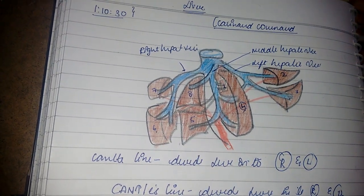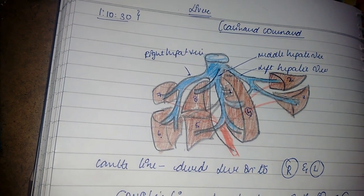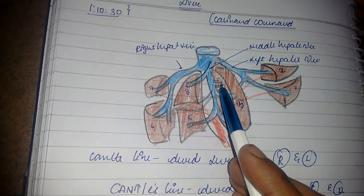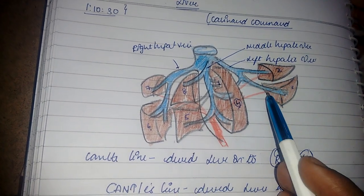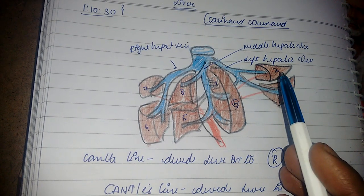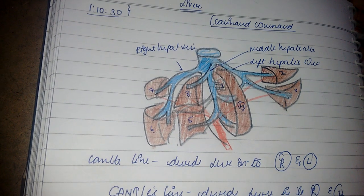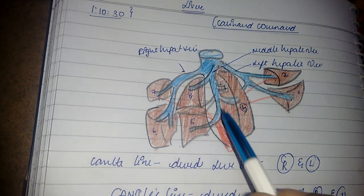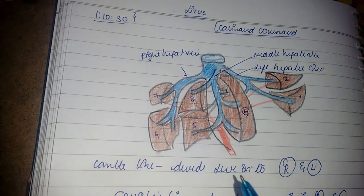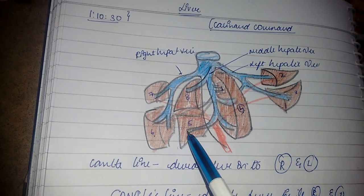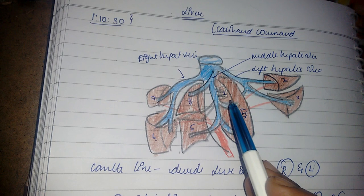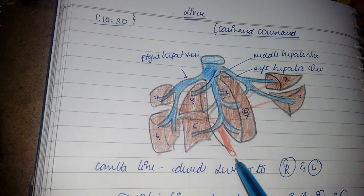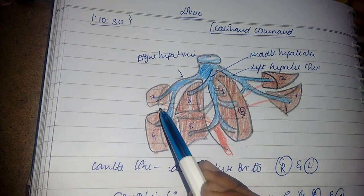Segment one is present behind the lobe — that is the caudate lobe. Segments two and three have their blood taken by the left hepatic vein. Then we have segment four, which is divided into four-a and four-b. Next we have five and eight, then six and seven.